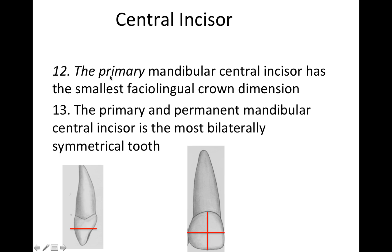On to the central incisors. The primary mandibular central incisor has the smallest facial-lingual crown dimension. The primary and permanent mandibular central incisor is the most bilaterally symmetrical tooth — make sure you take note of that. The mandibular central incisor is obviously the tooth that is symmetrical.